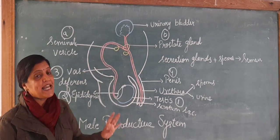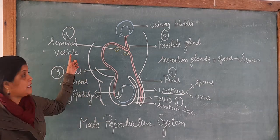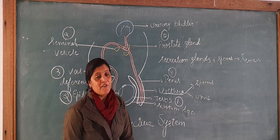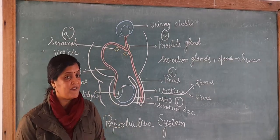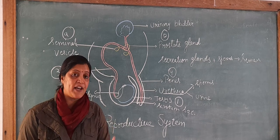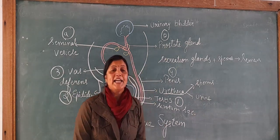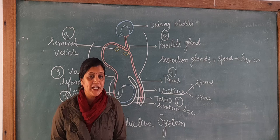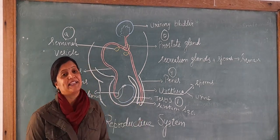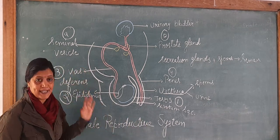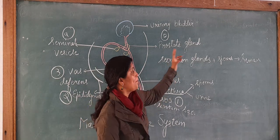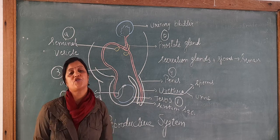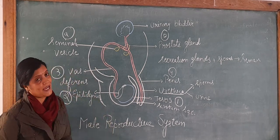Along with the four main parts, three accessory glands are also present: seminal vesicle (its fluid activates and nourishes sperm), prostate gland (its fluid gives mobility to sperms), and Cowper's gland (its secretion lubricates the penis at the time of copulation). The secretion of all three glands plus sperms is known as semen, which is transferred through the penis into the female vagina.